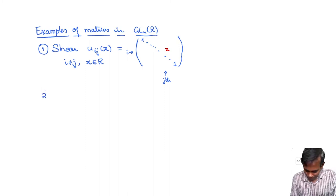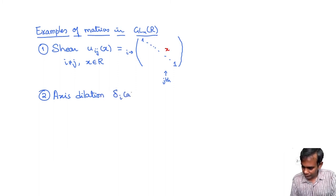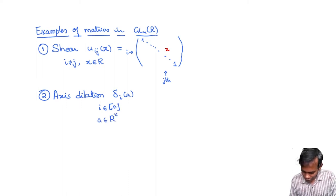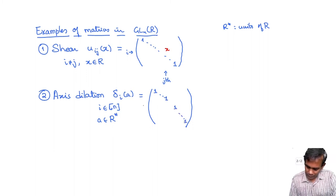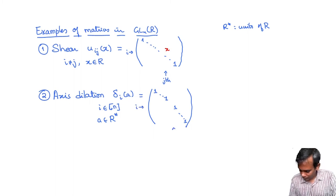And the second kind of element I want to introduce is what I'll call an axis dilation. And this is the element delta_i(a). Here i belongs to is one of the between 1 to n and a is any element of R that is a unit. So I'll write R star to denote units of R. So this is the matrix with 1s along the diagonal except in the ith row and ith column the ith diagonal entry. And there you would put this a. We needed a to be a unit because otherwise the determinant of this is a and that would not be a unit and this would not be an element of GL_n(R).